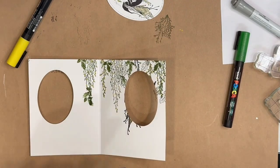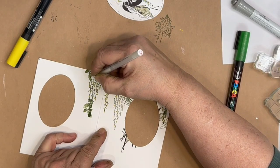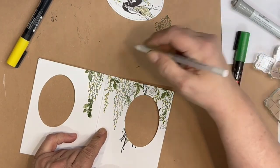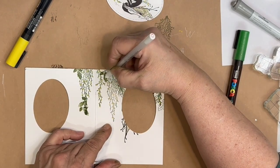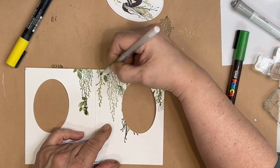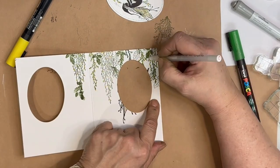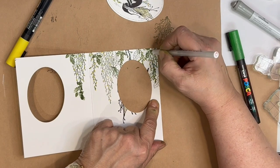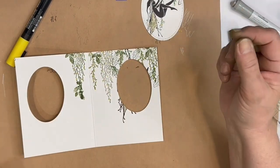I'm taking the white gel pen now and I'm just going to go over to show some veins on these larger oak leaves. And I'm just going to give this a little time to dry and then we're going to put the card together.